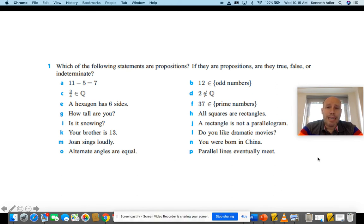B, C, and D have that weird symbols, but that's easy. 12 is an element of the odd numbers. That is a proposition, but it's not true. 3 fourths is an element of the rationals. Q stands for quotient or rational numbers. That's true.